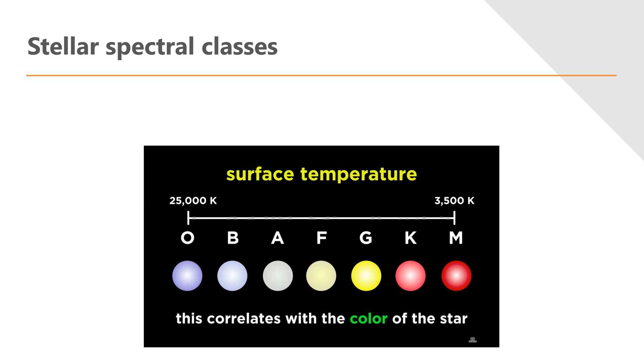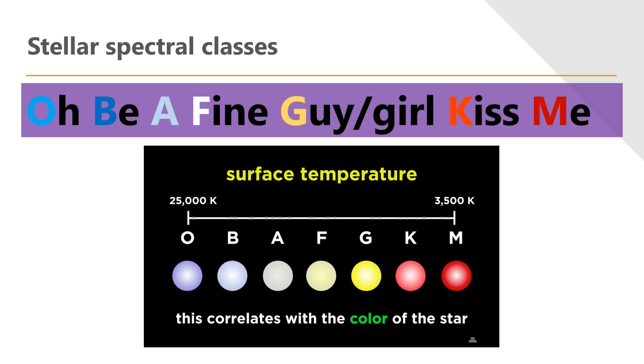Now there are lots of different mnemonics that you can use to remember the order of these. The classic old school one was 'Oh Be A Fine Guy or Girl Kiss Me.' I do recommend that you have a go at coming up with your own, it'll make it stick in your head better. But you are expected to be able to rank the different stars by their color and name their classifications.